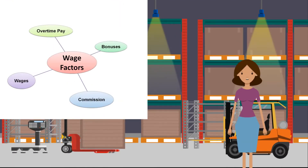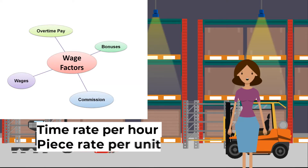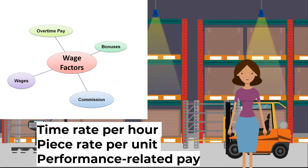The supply of labor to an occupation depends on the wage rate for the job. This wage rate can come in many different forms. Time rate: per hour worked per employee — usually called the hourly rate; workers' pay is linked directly to how many hours they work. Piece rate: per unit produced per employee — employees are paid a certain amount for each unit they produce, and how much they earn is linked directly to how many items they produce. Performance-related pay: employees are paid a commission on sales or an annual bonus, depending on how much they have produced.